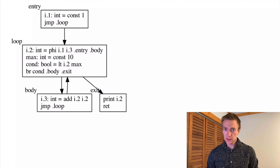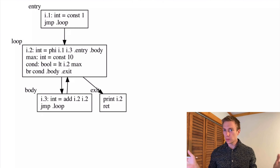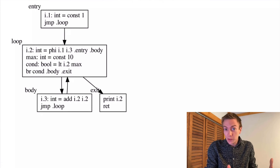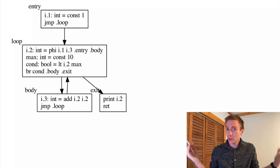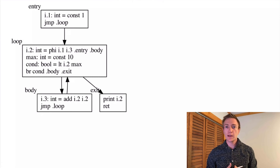We need to insert phi instructions when converting to SSA when different control flow paths assign to the same variable along different paths. It's not just that inconvenient programmers decided to reuse variable names — it is sometimes essential to the semantics of the program. This is the correct way to write a for loop: you update a value as you go around the loop — that's how you know when you finish. Phi nodes are actually essential to representing the semantics of imperative programs when we want to do it in SSA form.